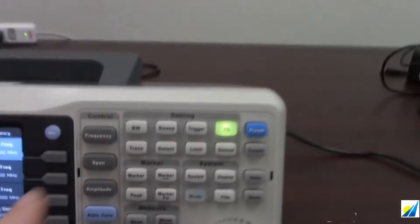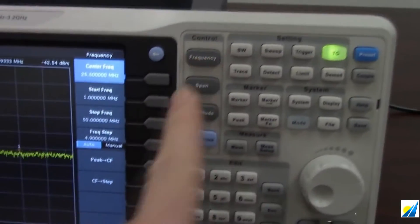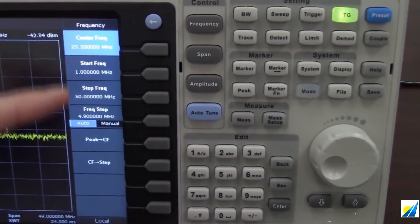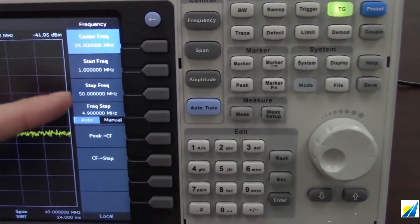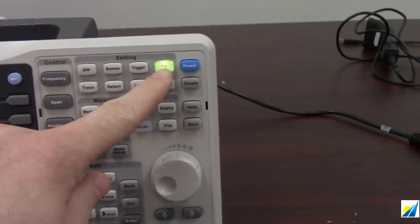So what I have done since this is a 30 megahertz filter, I've set my frequency. So our start frequency is 1 meg, stop frequency is 50 megahertz. We're going to set up the tracking generator here.